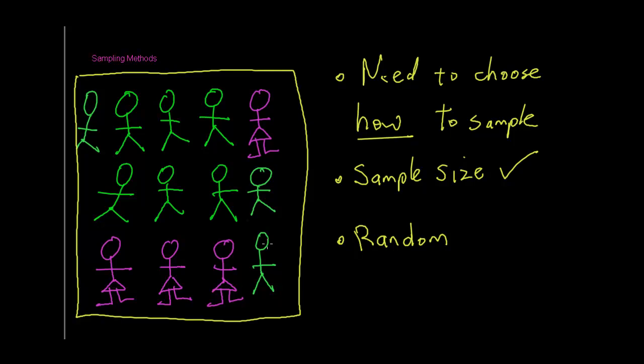So we need to work out how to sample this group so that our little sample that we grab is representative of the population and also that it is a random sample so that everyone has an equal chance of being selected. So let's have a look at a couple of methods.